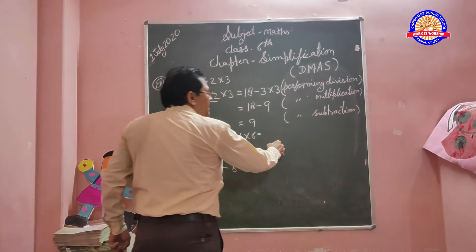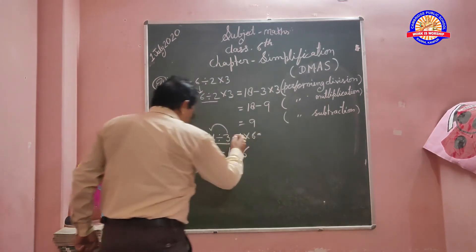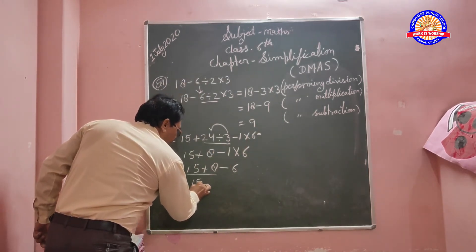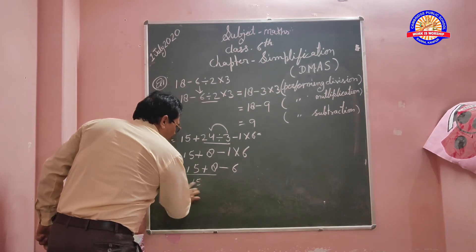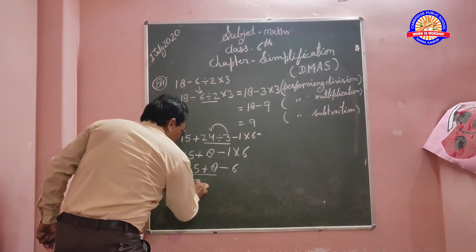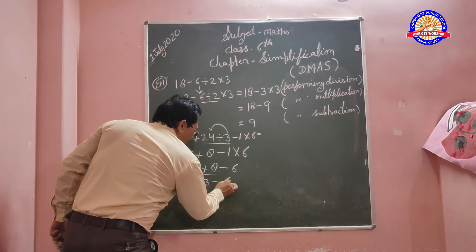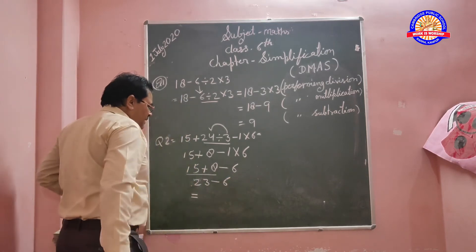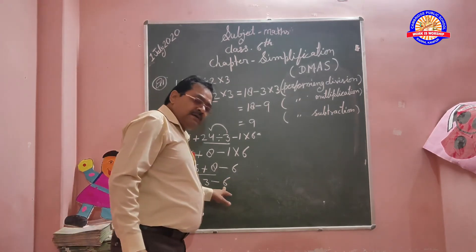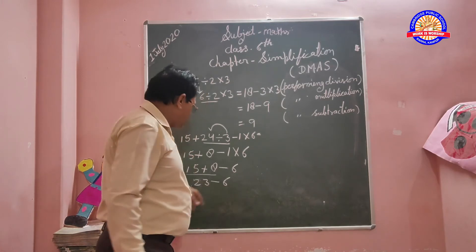Then addition first. 15 plus 8 equals 23. Then 23 minus 6. We subtract 23 minus 6.